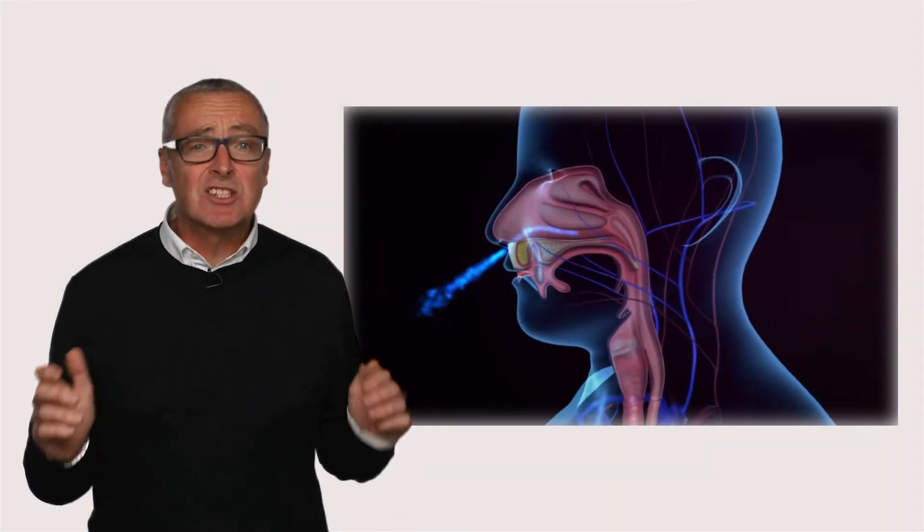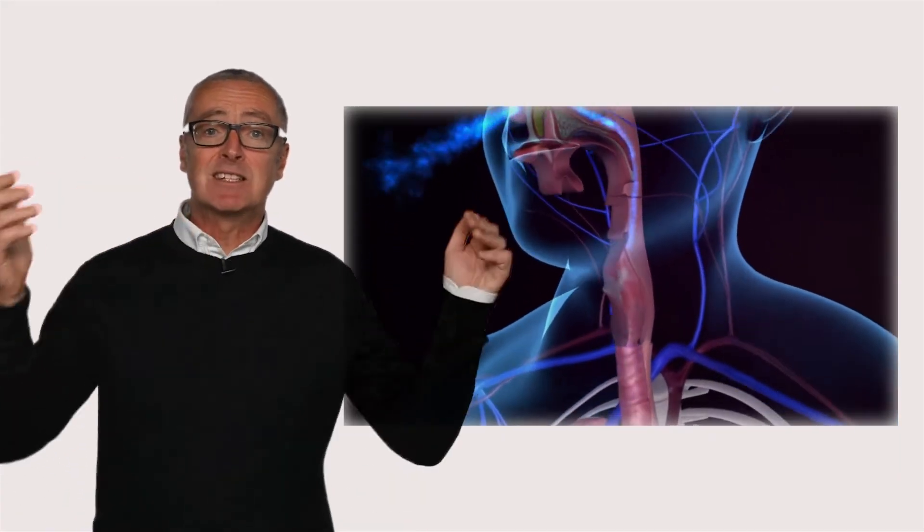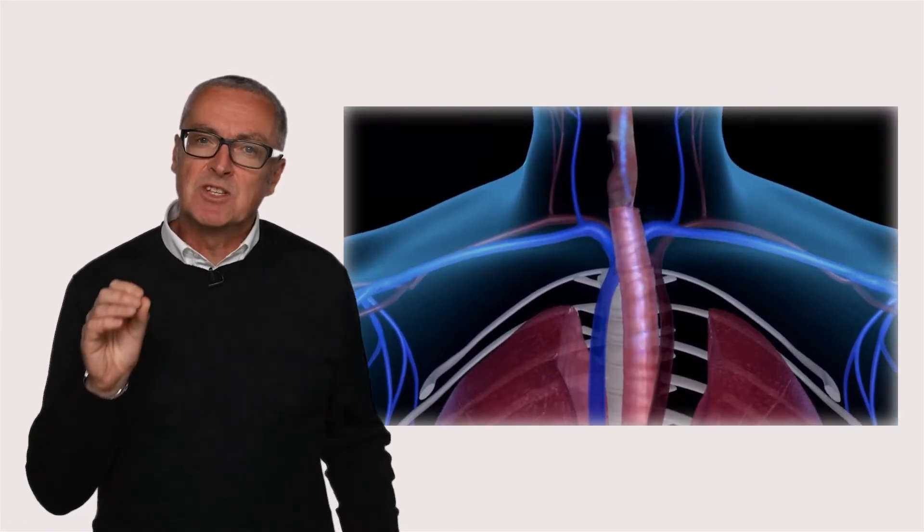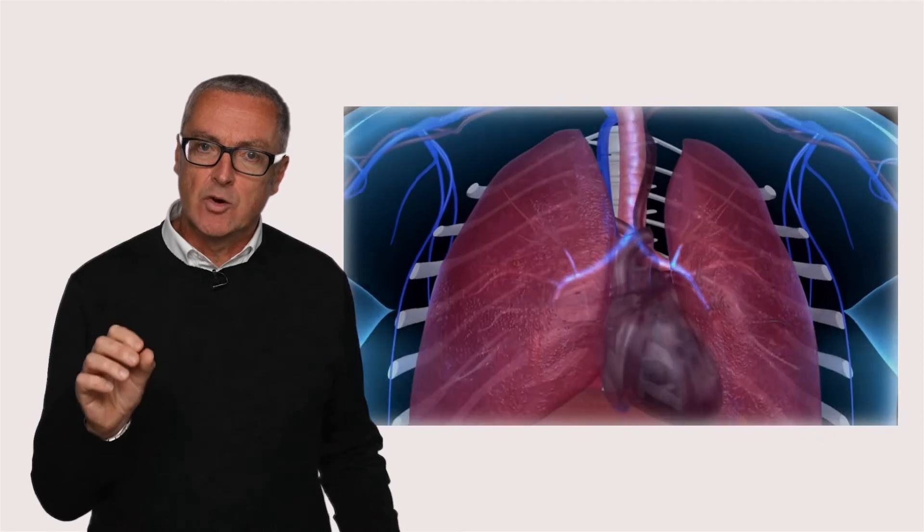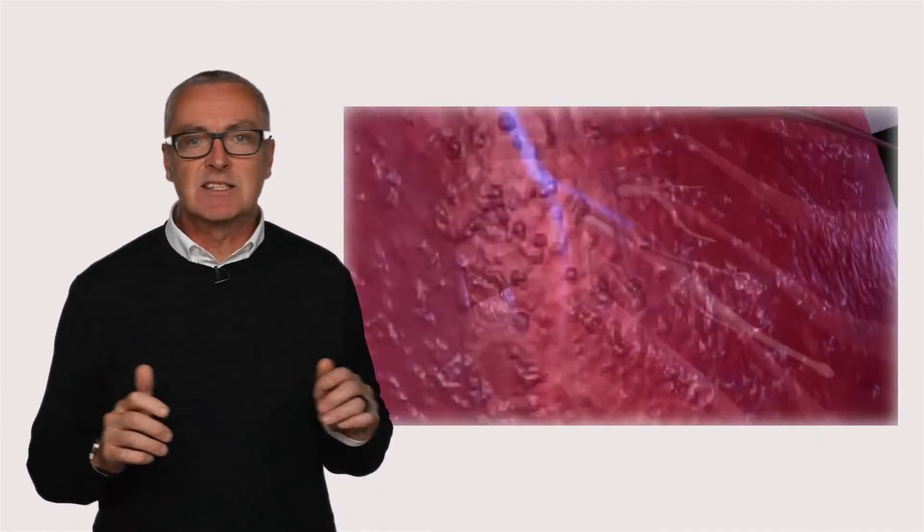If asbestos is disturbed, harmful fibres are released into the air. When these fibres are inhaled, they can cause fatal diseases. These diseases can typically take decades to develop and cannot be cured.